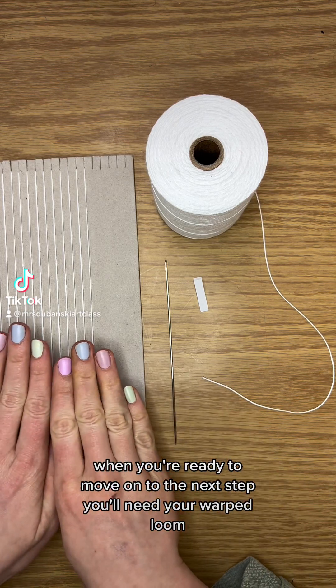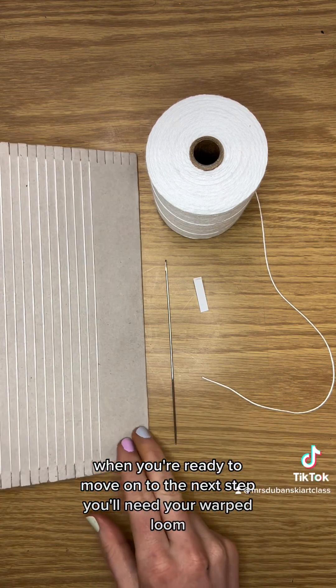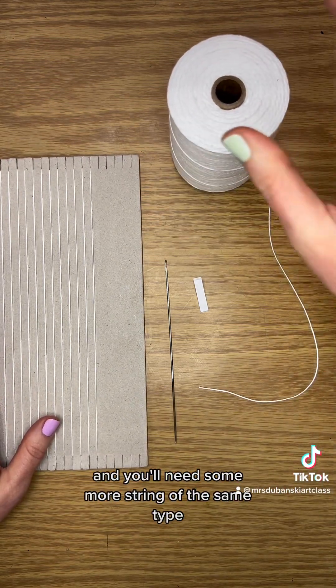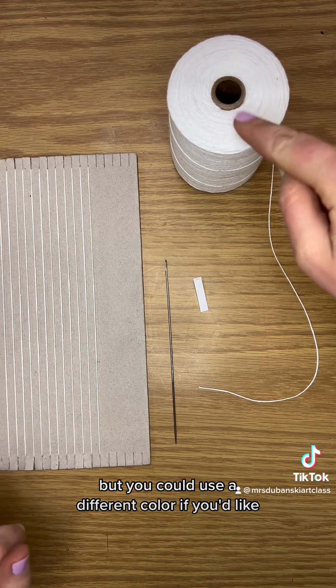When you're ready to move on to the next step, you'll need your warped loom. I've got white warp string here and you'll need some more string of the same type, but you could use a different color if you'd like.